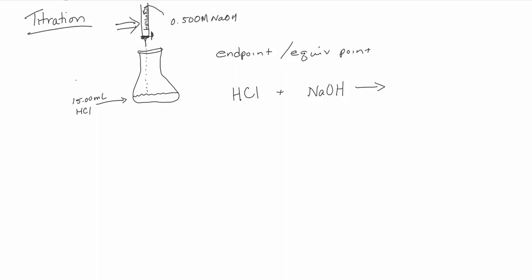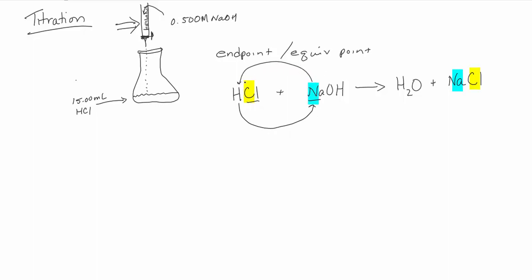An acid-base neutralization reaction will always form water and a salt. Salt is a chemical word and is not necessarily what you put on your food at the dinner table — though in this case our salt is sodium chloride, which is what you put on your food at the dinner table. A salt is the cation of the base and the anion of the acid. This is a double displacement reaction: the H comes and knocks the sodium out of the way, and the sodium takes the place of the hydrogen.